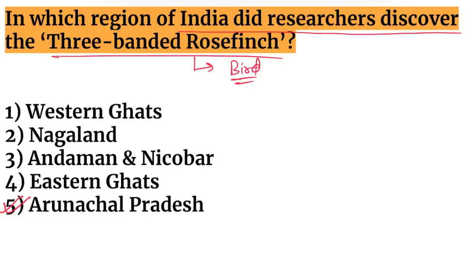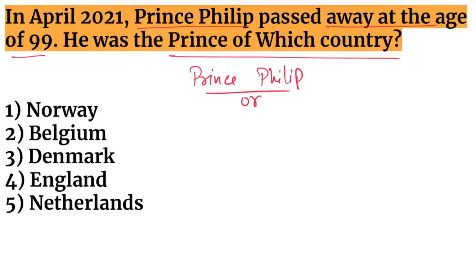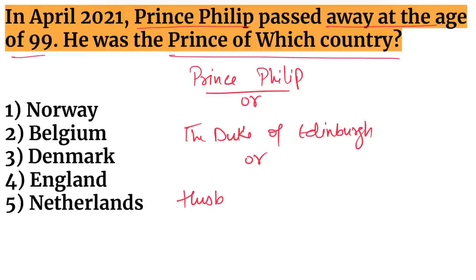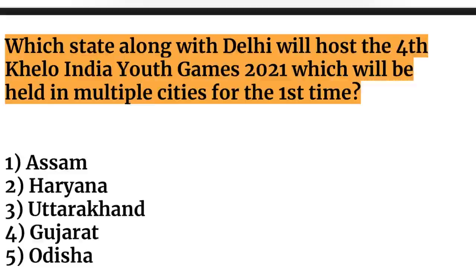In April 2021, Prince Philip passed away at the age of 99. This question can be asked in various ways — as Prince Philip, as the Duke of Edinburgh, or as the husband of Queen Elizabeth II. The answer is that Prince Philip was the prince of England.